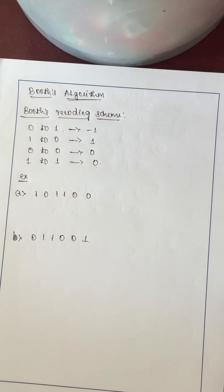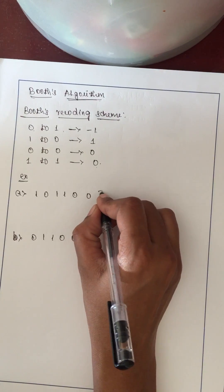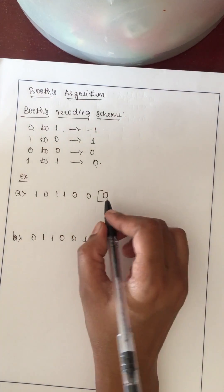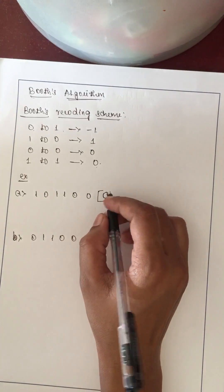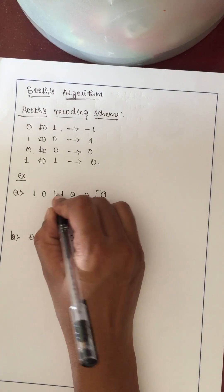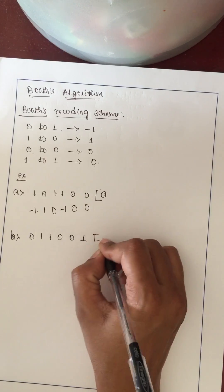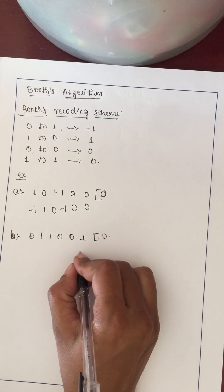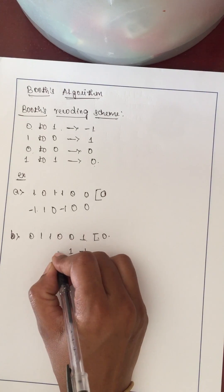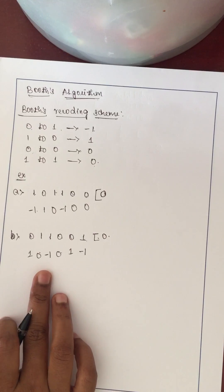You can recode only the multiplier value — the binary number of your multiplier is what gets recoded. For example, take 1 0 1 1 0 0. Imagine a 0 appended on the right, then combine pairs leftward: 0,0→0; 0,0→0; 0,1→-1; 1,0→+1; 0,0→0; 0,1→-1; 1,1→0; 1,0→+1; 0,0→0. This is how we recode.